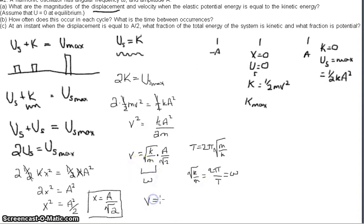So v, when the two energies are equal to each other, is equal to omega times a over radical 2.